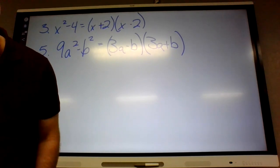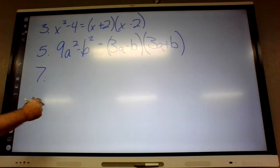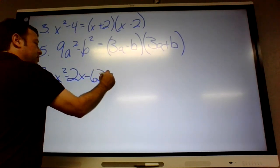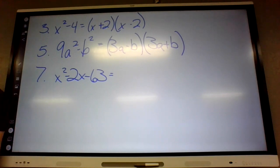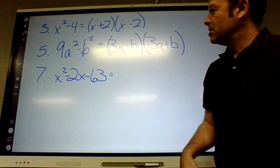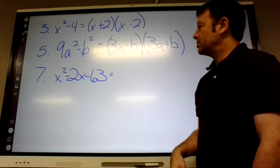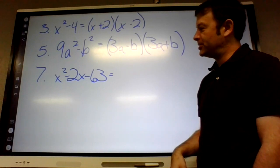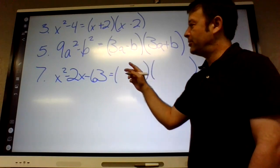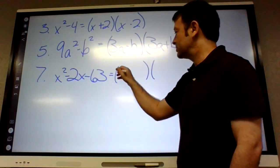Number 7. X squared minus 2X minus 63. Let's go around the horn. Does anybody want to volunteer to start? Natalie, we'll go counterclockwise. Can we take anything out, Natalie? No. Is it square minus a square? No. Is it three term? Yes. What's going to go in the front? X.